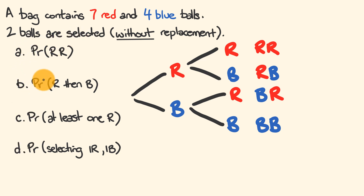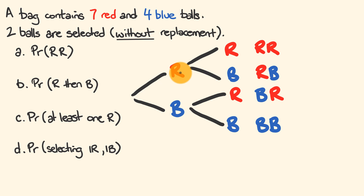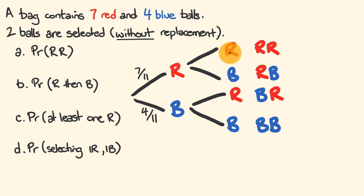We'll find the same four probabilities: red then red, red then blue, at least one red, and one red one blue. The tree diagram looks the same and the outcomes are the same, but the probabilities of getting each outcome have now shifted. We start with 11 balls, select one, and do not put it back — this affects the probability as we go along.